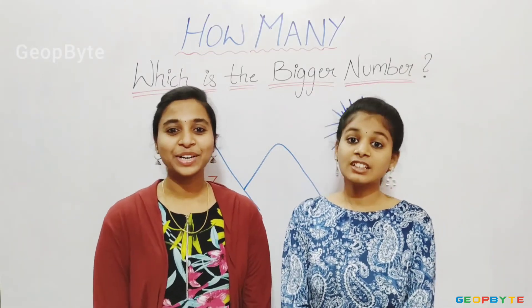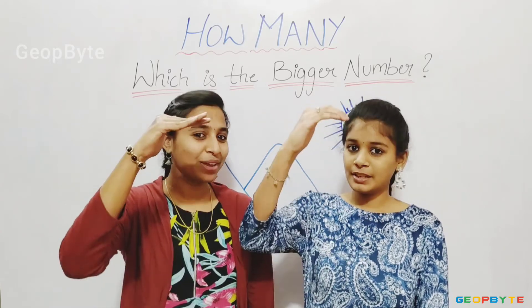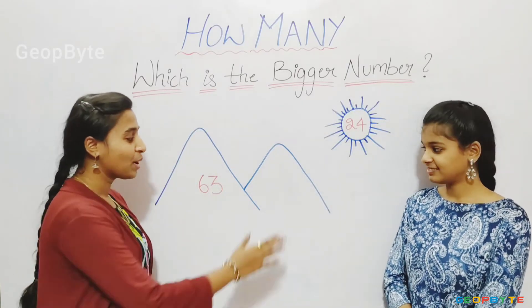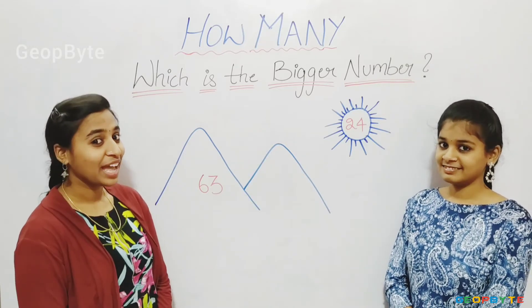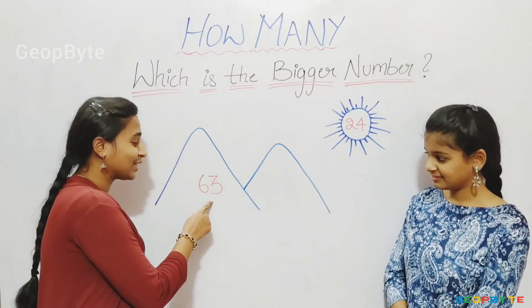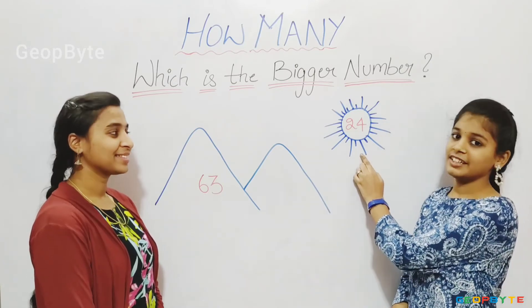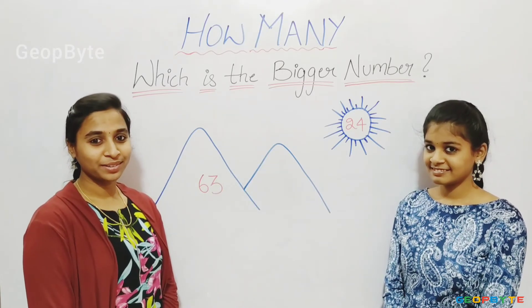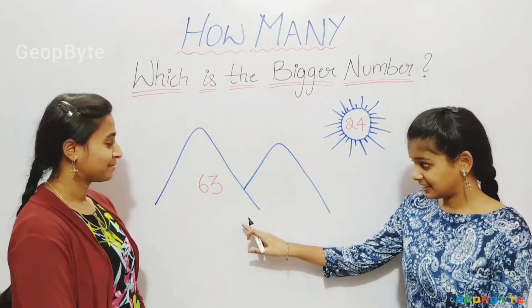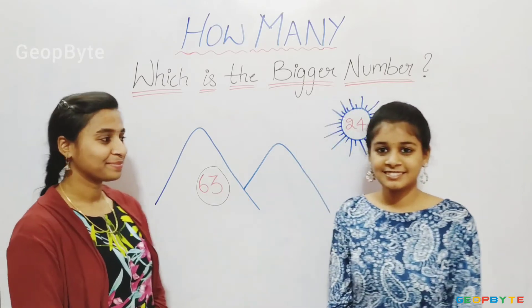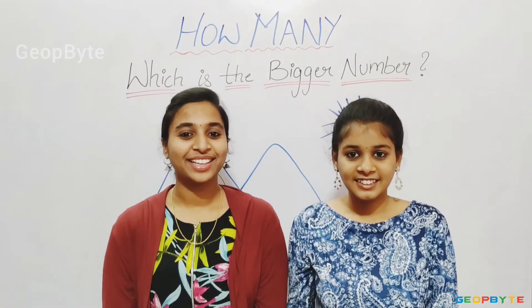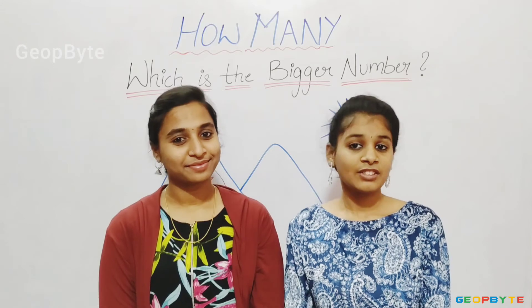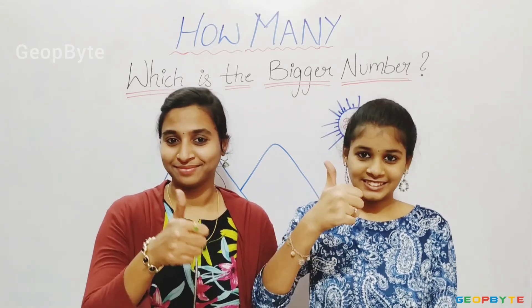Now let us get into the topic — which is the bigger number? Hey kids, see here. We have mountains and sun. We have numbers in those — 63 in the mountains and 24 in the sun. Which is the bigger number? Yes, correct answer. 63 is the bigger number. Hey kids, there is a small activity for you. Try to identify the bigger numbers. Now we have completely understood the topic — which is the bigger number?